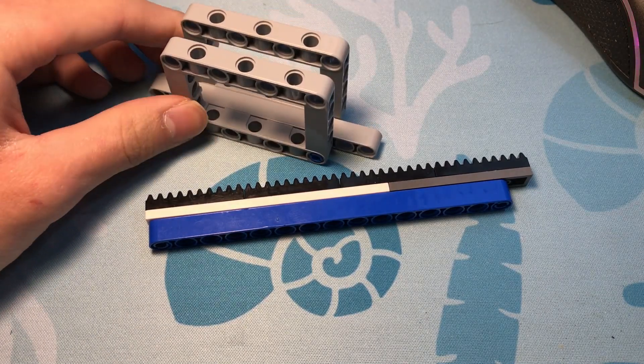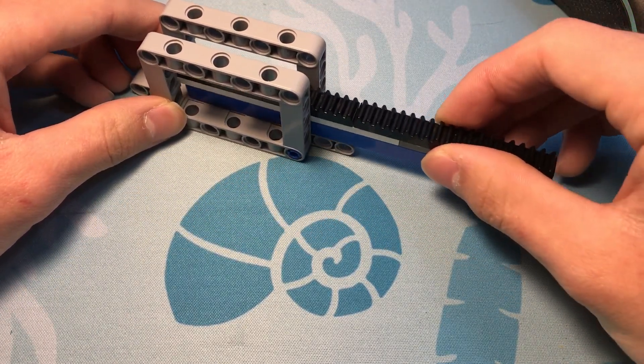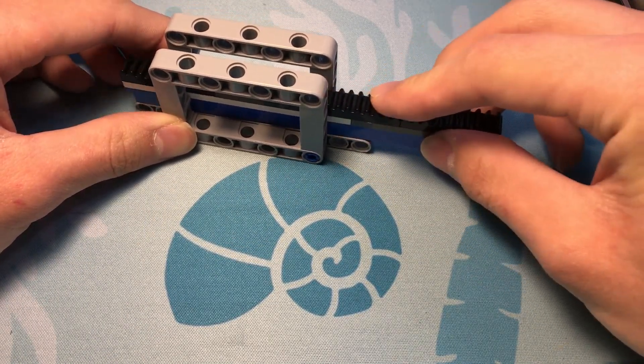So here I've made a housing. And when we insert our rack into it, we can see that it can only slide this way and not this way.